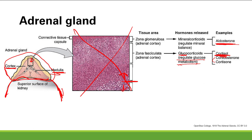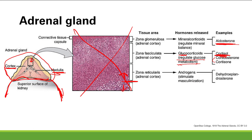Going deeper still, the next layer is the zona reticularis, which is responsible for making androgens that stimulate masculinization. An example is DHEA, which can be converted into testosterone.